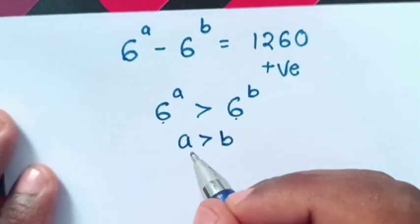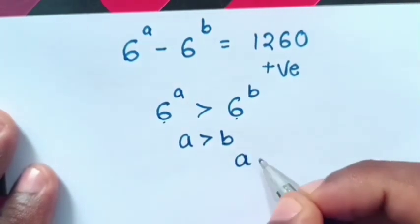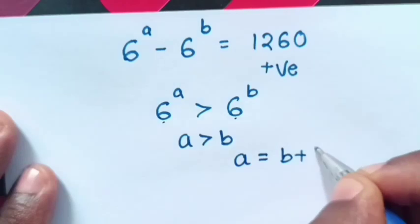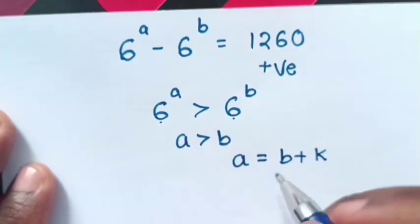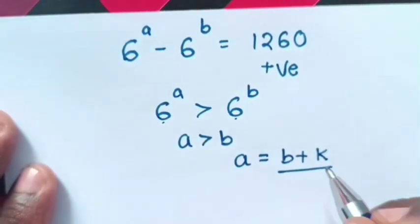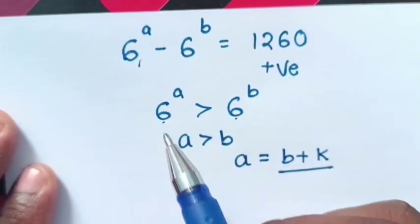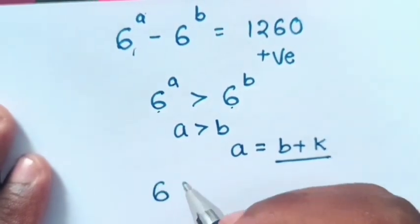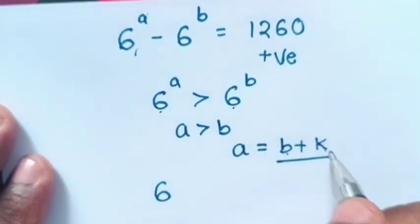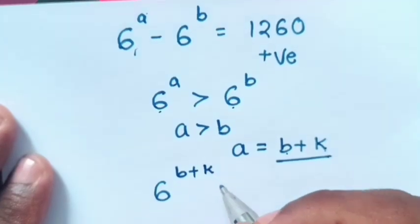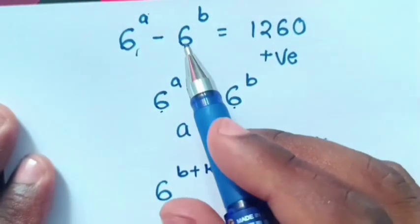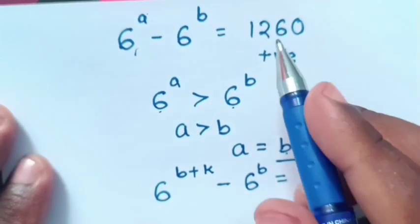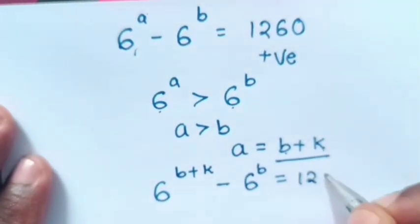Then, if a is greater than b, it means a is equal to b plus constant. Now, we substitute this b plus k into a power of a in our equation. So, it will be 6 to the b plus k minus 6 to the b is equal to 1260.